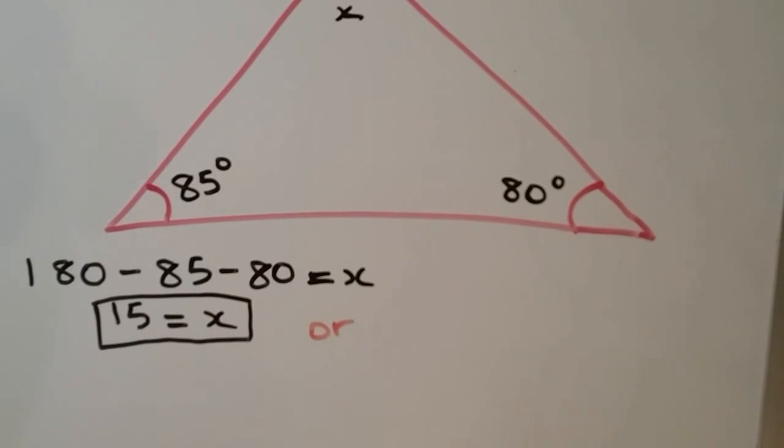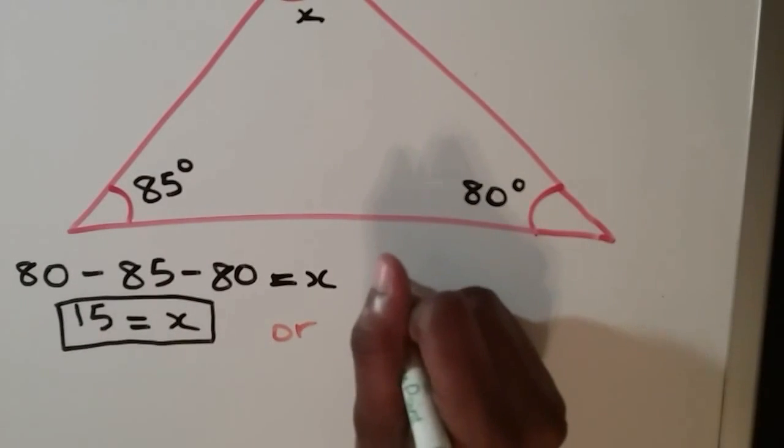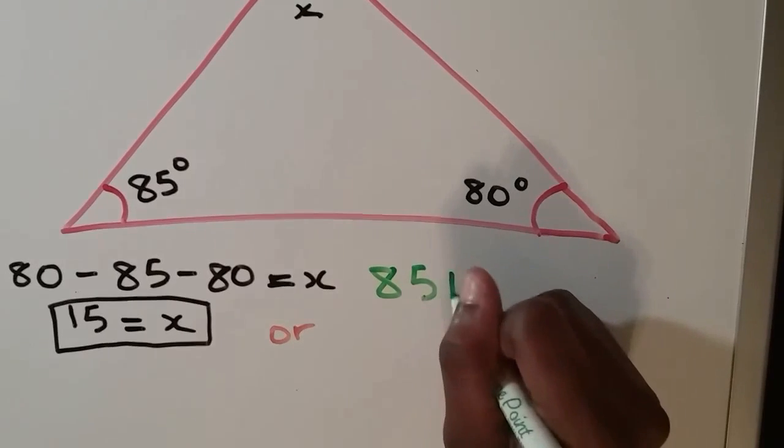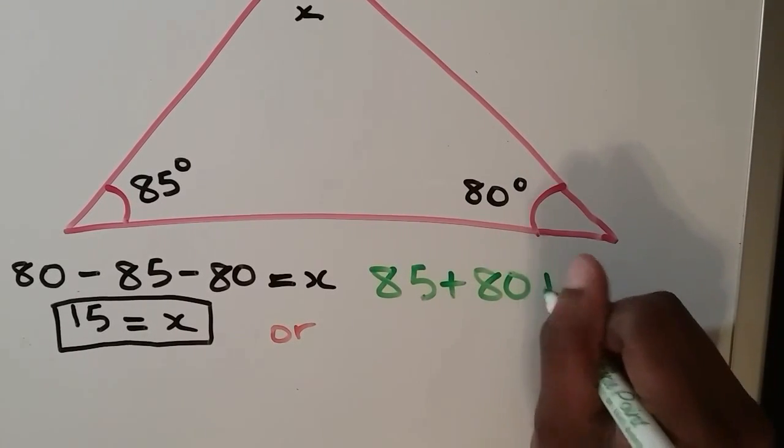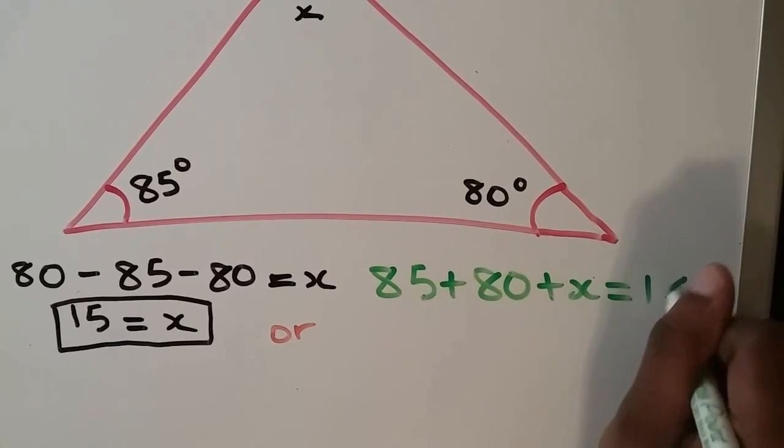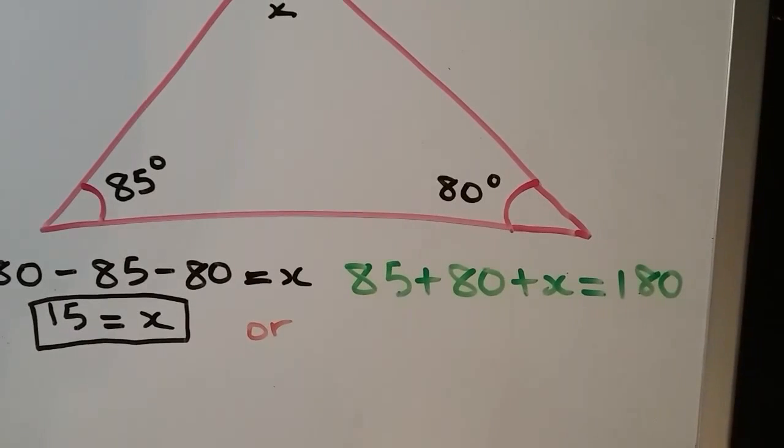You can also look at this as an equation. In this case, the equation would be 85 plus 80 plus x is equal to 180. Then we would solve this like a regular equation.